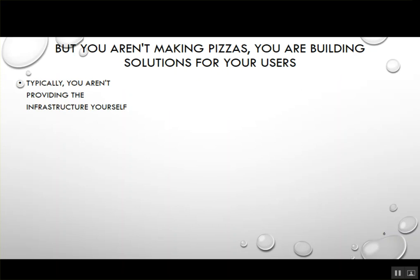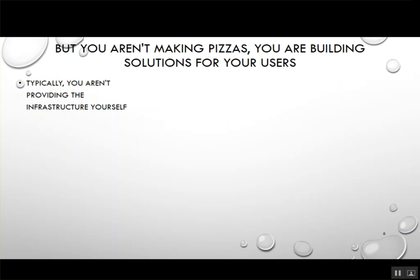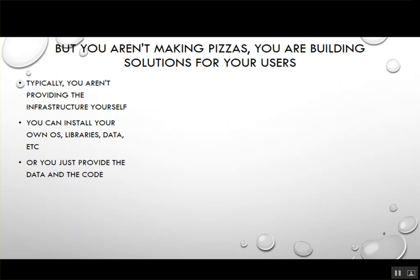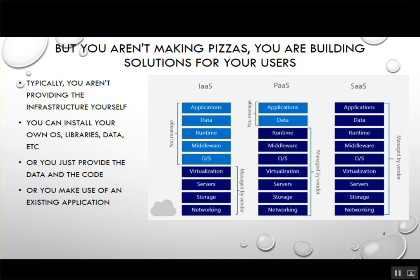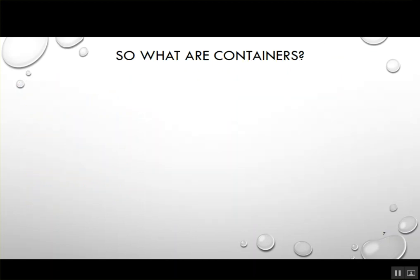You aren't making pizzas — you're building solutions for your users. You don't typically go to Best Buy and buy a machine to host an application. With IaaS, you say 'I need a machine,' they provide it, and you install your own OS, libraries, and data. With PaaS, you say 'I need a JBoss server,' they provide it, and you just supply the code and data. With SaaS, the whole solution is already built.